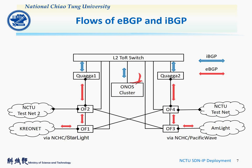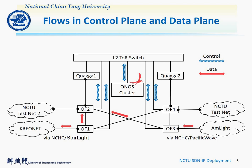SDN classifies flows into control flow and data flow. Flows in the control plane communicate with the ONOS cluster and Quagga through connecting each management port to the L2 type of rack switch, which includes OpenFlow messages and SSH connections, while data packets are forwarded by OpenFlow switches in the data plane.